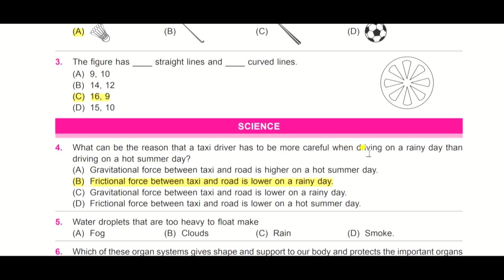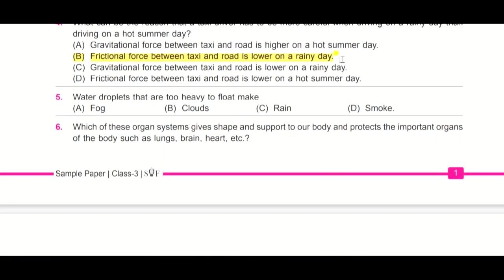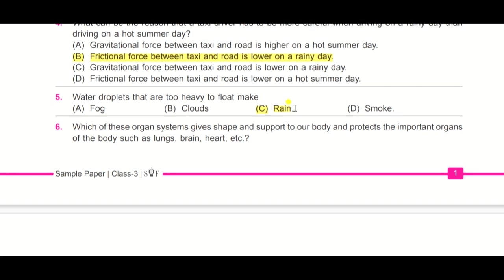Question number five: water droplets that are too heavy to float make fog, clouds, rain, or smoke? What does it make? It makes rain, so the answer is C.